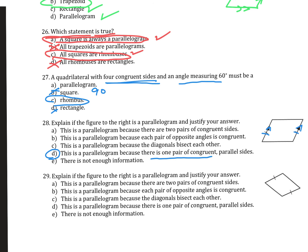Number 29. Explain if the figure to the right is a parallelogram and justify your answer. Well, we've got opposite sides that are congruent. Is that enough information? No, this is not enough information. We just know that there's one pair - we need something else. So I don't know whether this is a parallelogram. Alright, this is the fourth page of the chapter six test review.